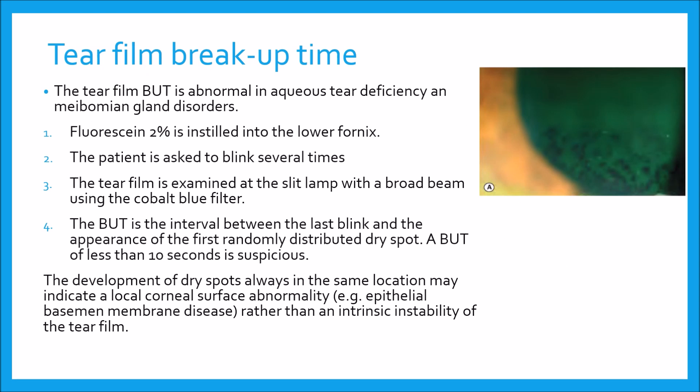Tear film breakup time: the tear film breakup time is abnormal in aqueous tear deficiency and meibomian gland disorders. To measure it, fluorescein 2% or an impregnated fluorescein strip moistened with non-preserved saline is instilled into the lower fornix. The patient is asked to blink several times. The tear film is then examined at the slit lamp with a broad beam using the cobalt blue filter. After an interval, a black spot or line appears in the fluorescein-stained film indicating the formation of dry areas.